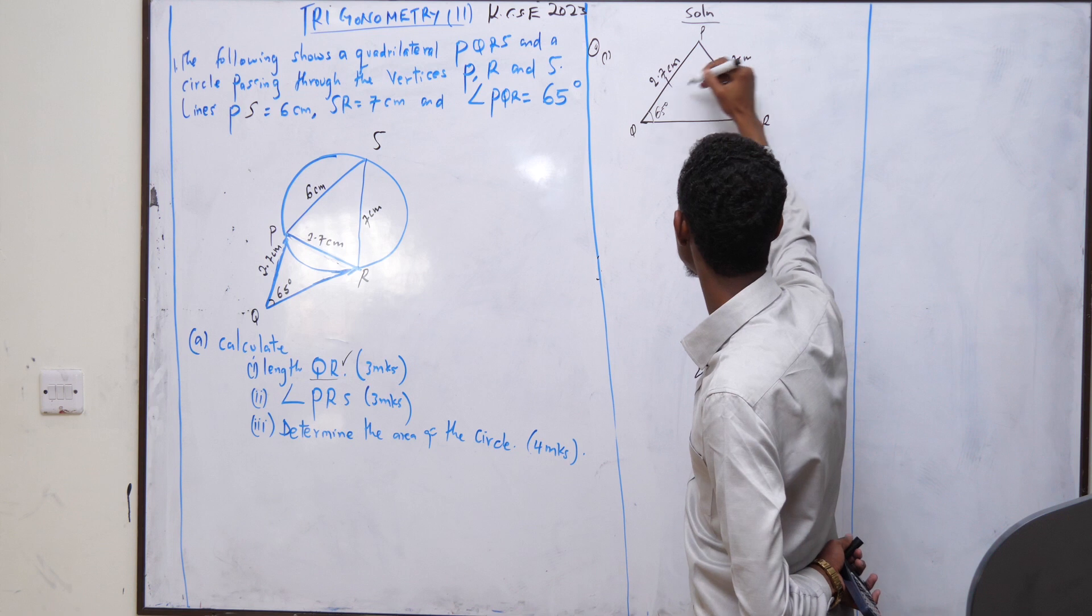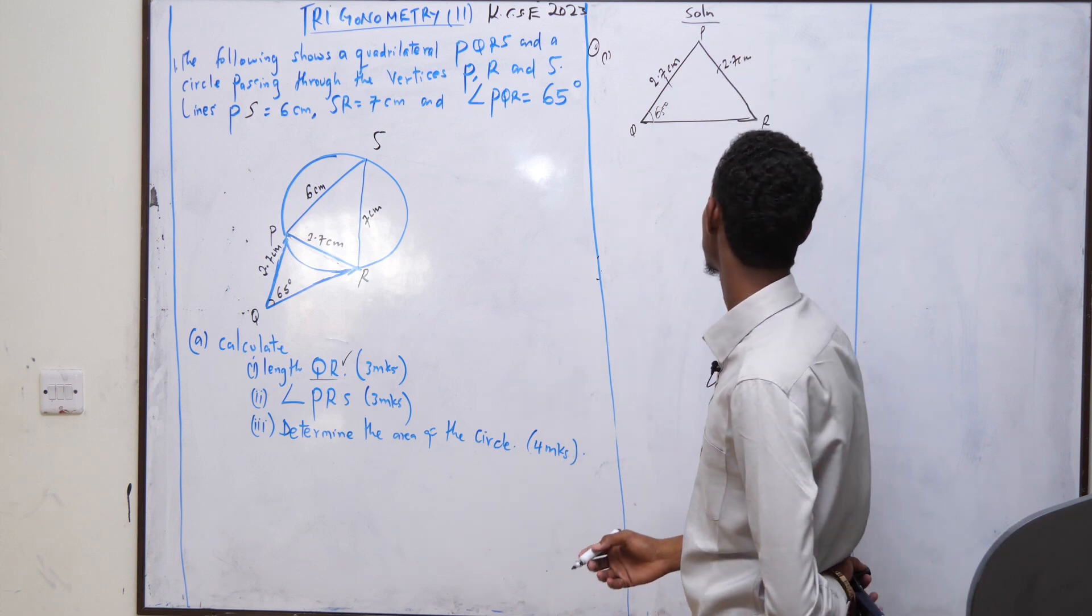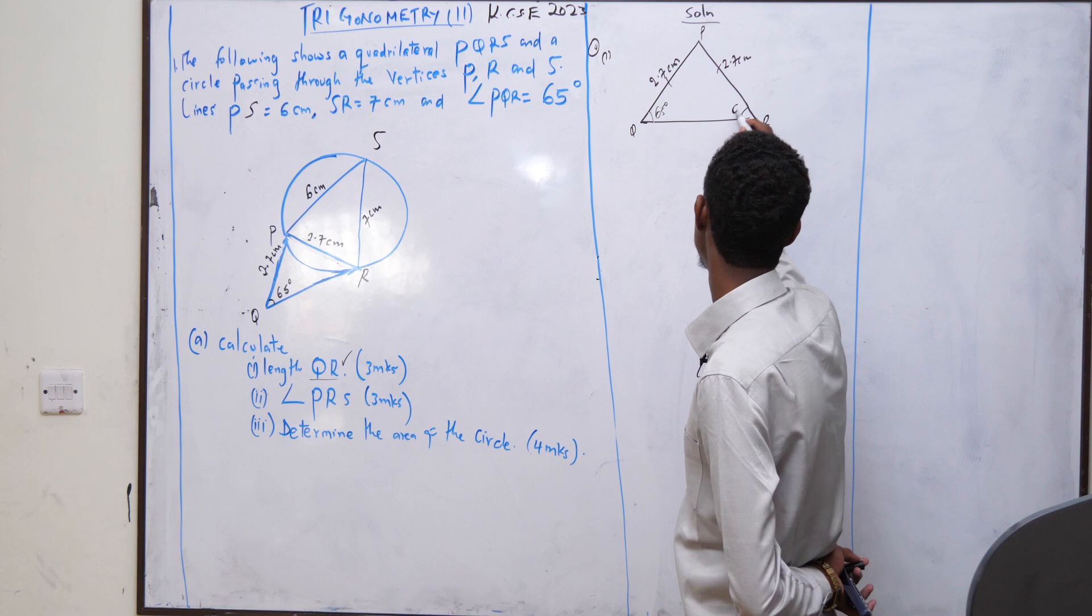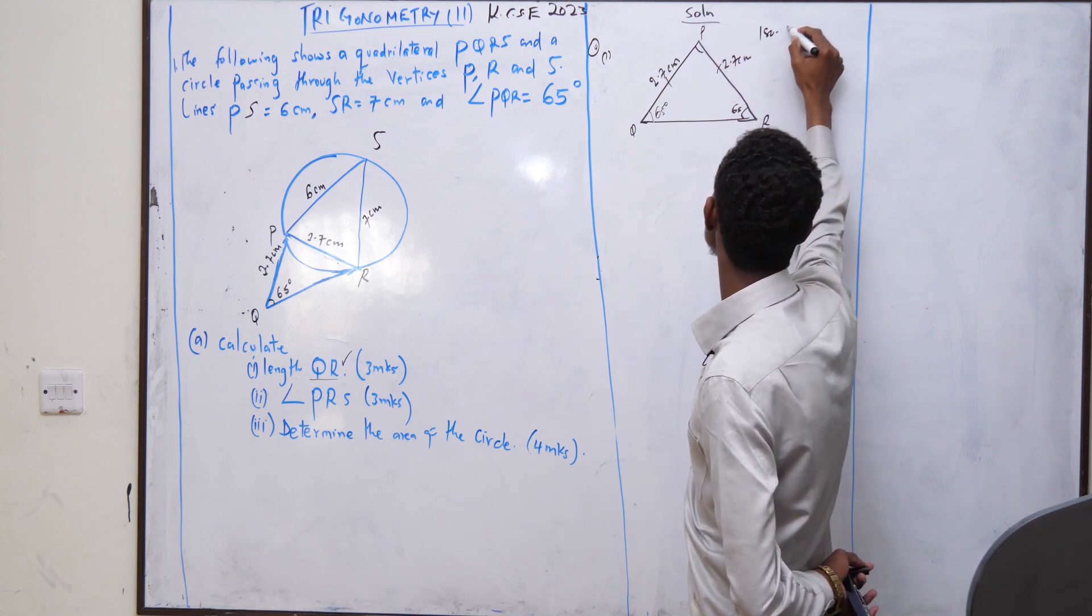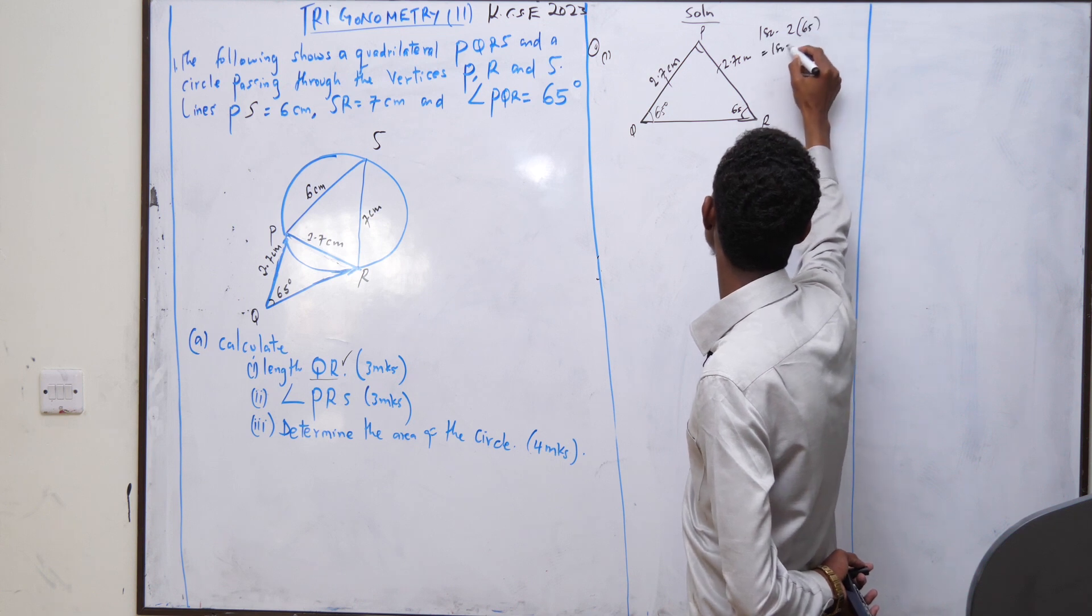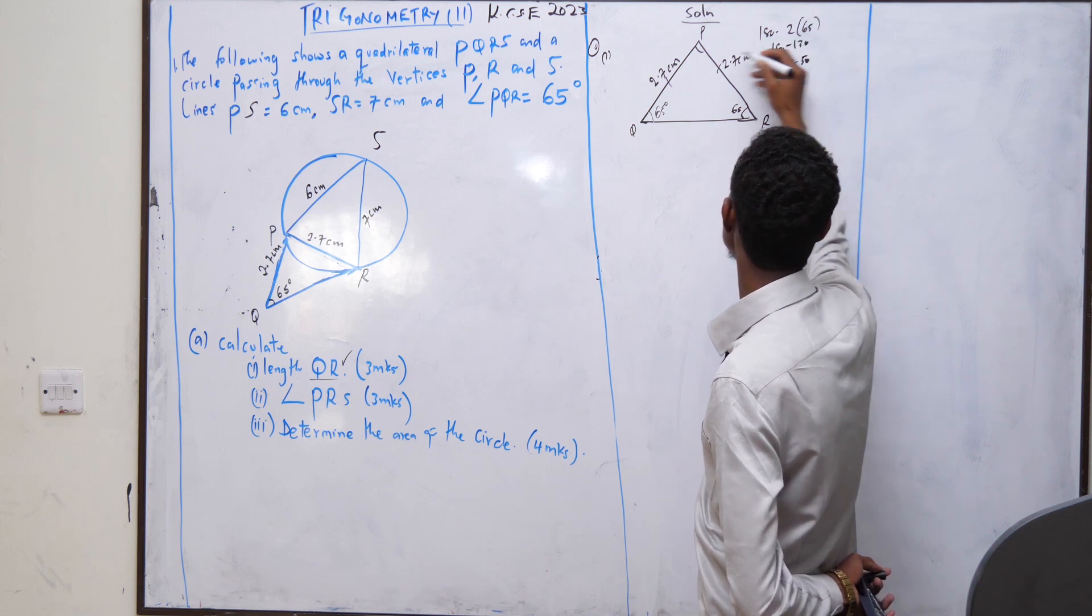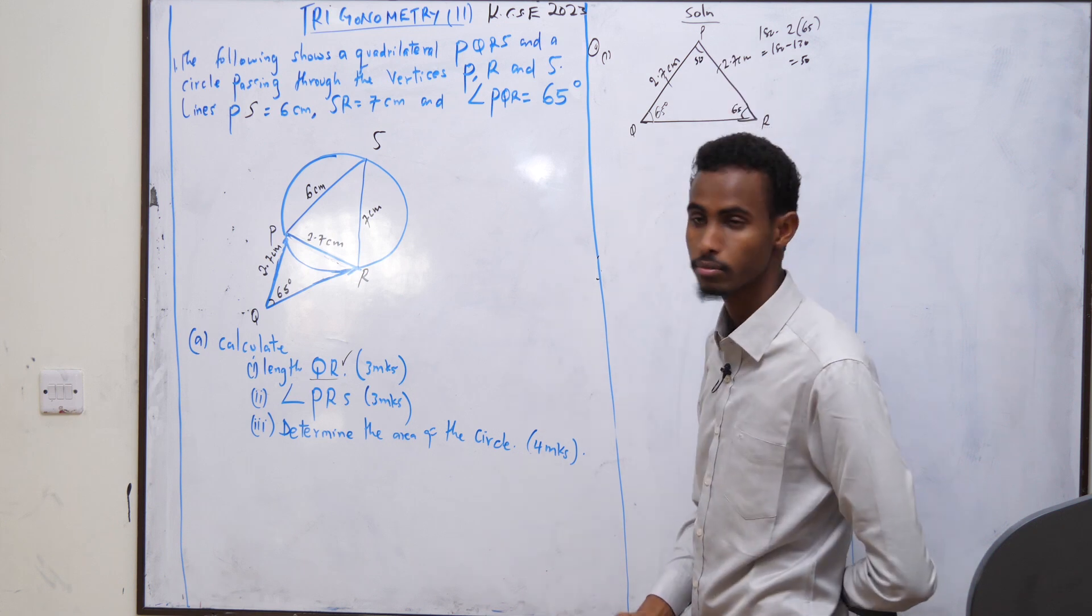You can see that this is an isosceles triangle. Both the two lengths are similar. Therefore, we can also find here it is still 65. Here it becomes 180 minus 2 into bracket 65, which is 180 minus 130, which is 50 degrees.